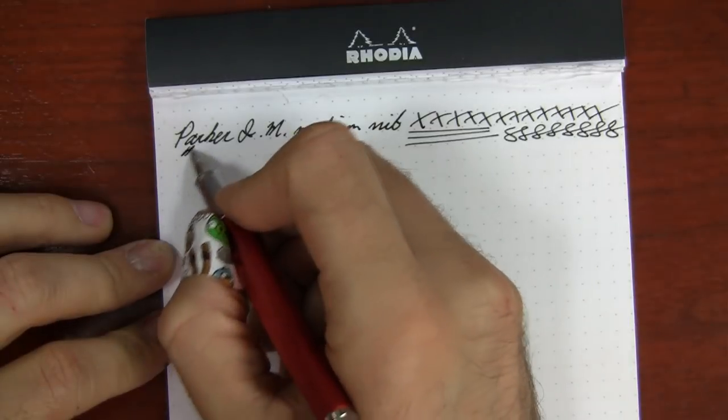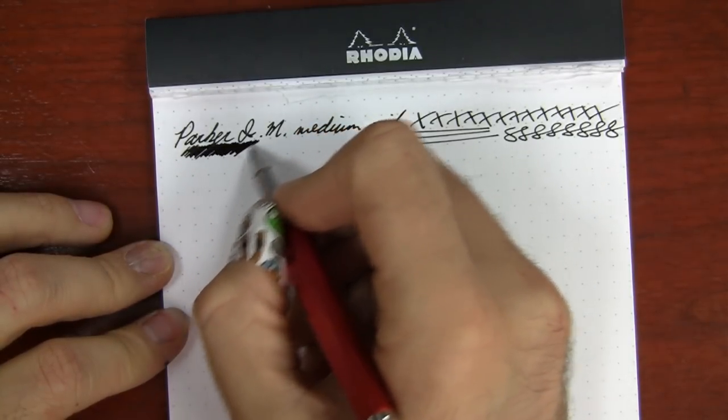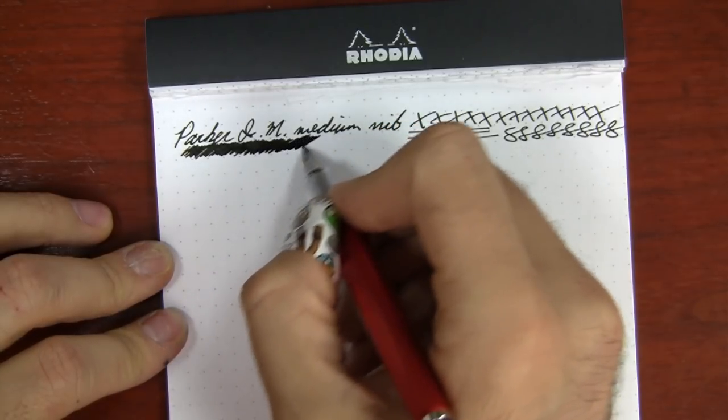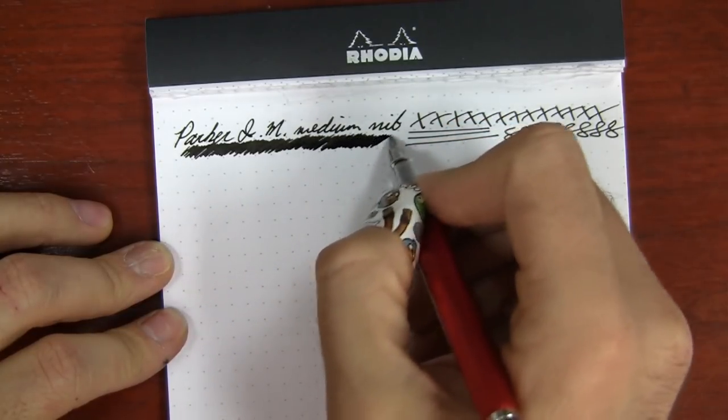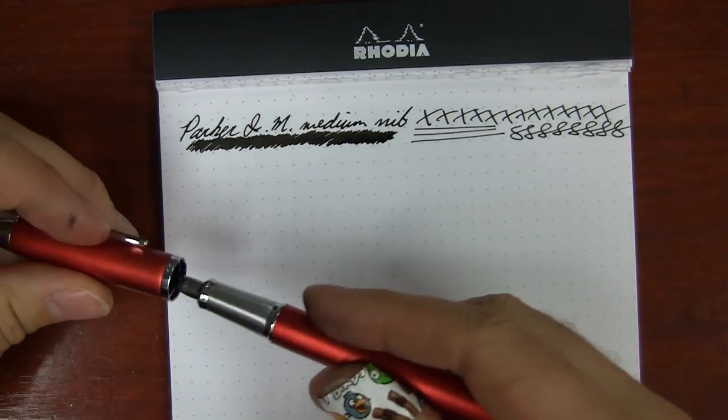But some of you, I know, like finer nibs and stuff like that. And I'm sorry. It's going to write like a Western pen. So it's going to write a little bit broader, I guess, than your Japanese counterparts. But there you go. That's Noodler's Black.